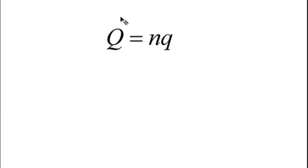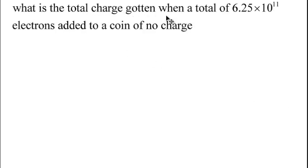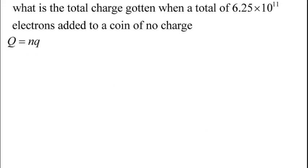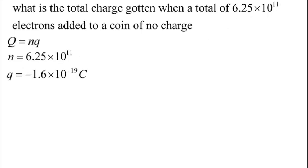In every question on quantization of charges, we are either looking for the charge or looking for the number. Next question: What is the total charge gotten when a total of 6.25 times 10 to the power of 11 electrons are added to a coin of no charge? This number is N — the electrons added to a neutral body. From the equation Q = N × e, our N is 6.25 times 10 to the power of 11, and e is negative 1.6 times 10 to the power of minus 19.